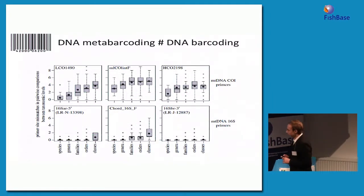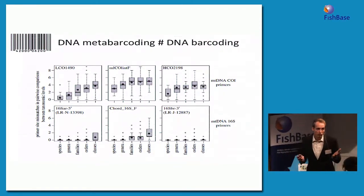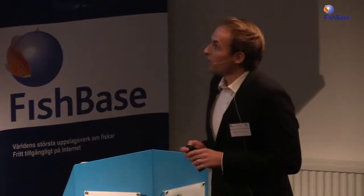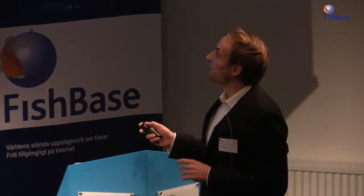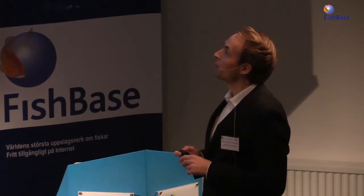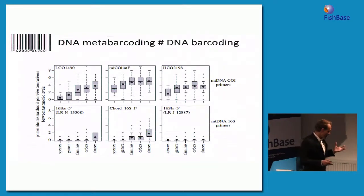When you use protein-coding genes, you can have substitutions that don't change the amino acid and don't change the protein. So you have a lot of these accumulating in protein-coding genes — a high variation. This is very good when you want to identify different species. But when you have a complex sample with many different DNA fragments, you have big problems finding conserved regions where you put your primers, because it's so variable you can't really amplify all the CO1 fragments simultaneously.